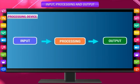Input → Processing → Output. This is called the IPO cycle. The computer works on the IPO cycle.